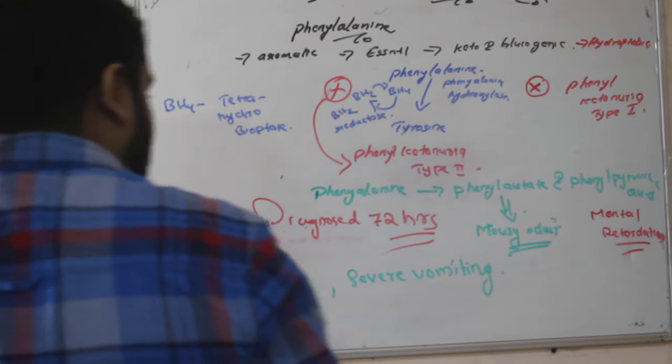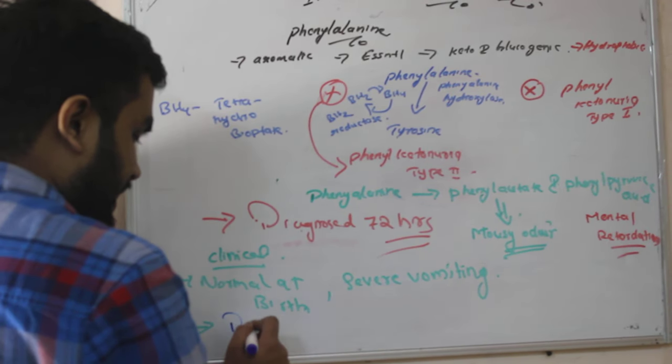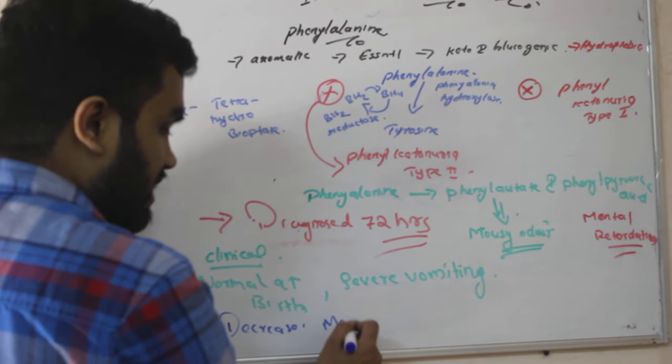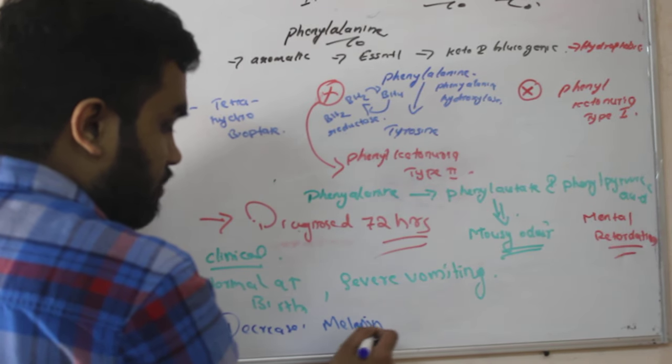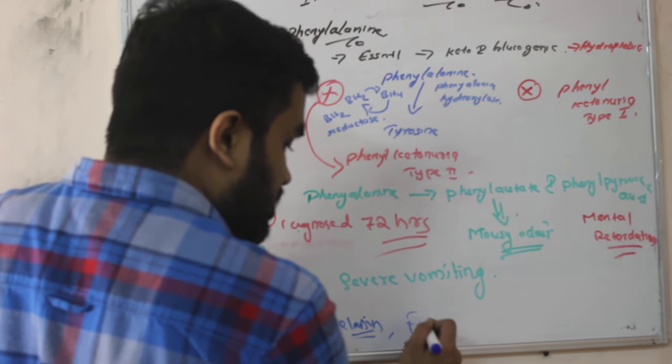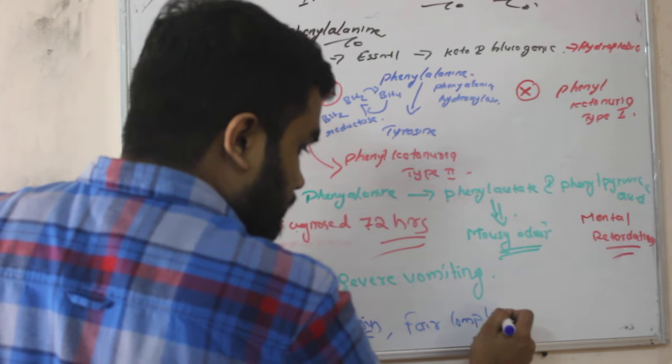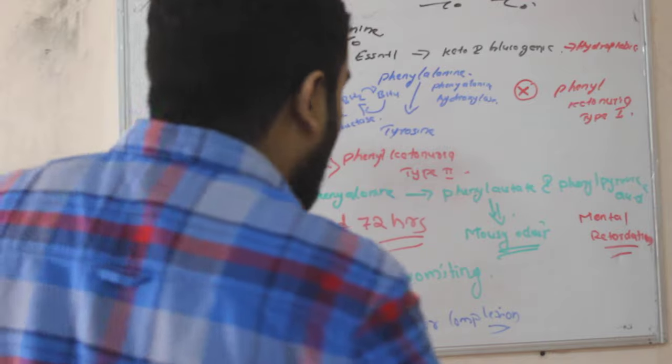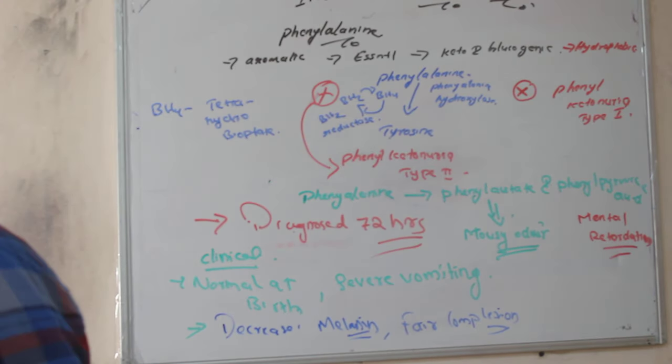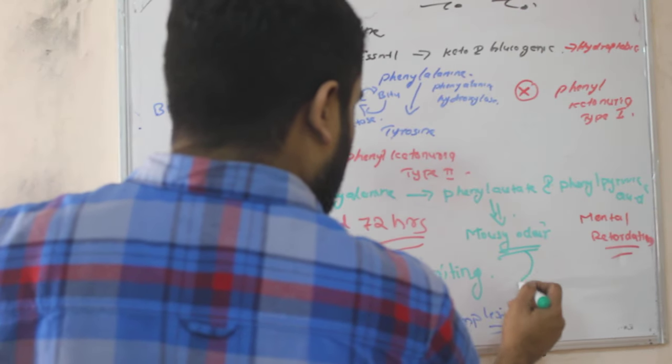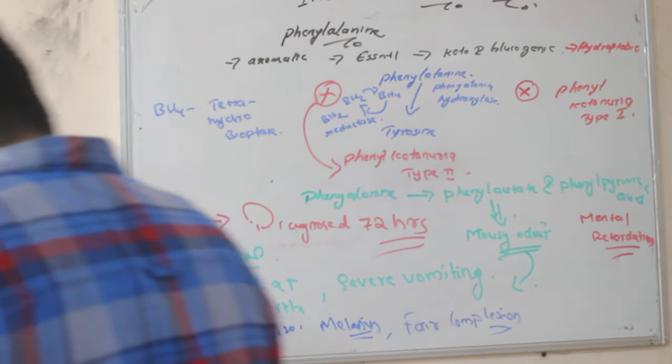So they will show decreased melanin. Decreased melanin when we study tyrosine, you will be able to understand because tyrosine forms the melanin pigment. So there will be fair complexion baby. Melanin is decreased, there will be fair complexion. Now the mousy odor, this is also a clinical feature. Mousy odor that will be present in urine.